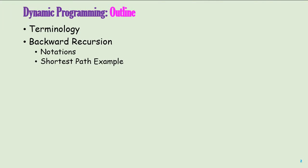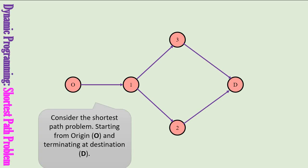Here is the outline of my talk. Let us begin with terminology. Consider this shortest path problem. The nodes represent the cities, the arcs represent possible paths between the cities, and the goal is to find the shortest path from node O to node D.